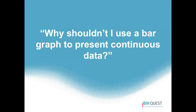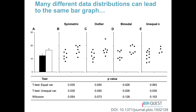Why shouldn't you use a bar graph to present continuous data? Many different data distributions can lead to the same bar graph, and the actual data may suggest different conclusions from the summary statistics alone. Here you can see a bar graph on the left and four different data distributions that will give you that same bar graph on the right. The first thing to note is these are very small sample sizes, so there's a lot of uncertainty here and you shouldn't be too confident in the findings from any of these studies.